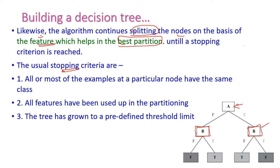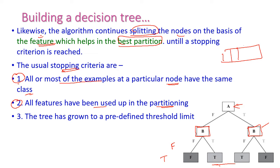There are three stopping criteria. The first is when all or most of the examples of a particular node have the same class — that is, the maximum branches have the same class value, either true or false. The second is when all the features have been used up in partitioning — for example, if we have four features and all four have been used. The third is when the tree has grown to a predefined threshold limit; once it reaches that limit, tree generation stops.